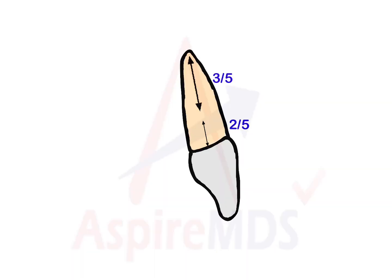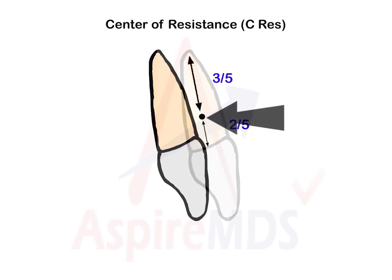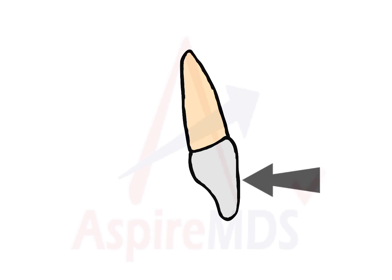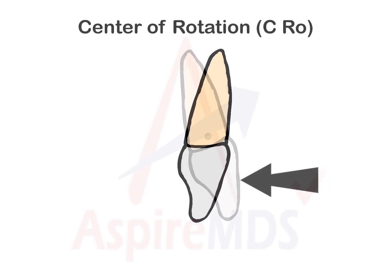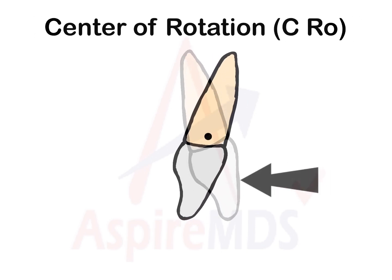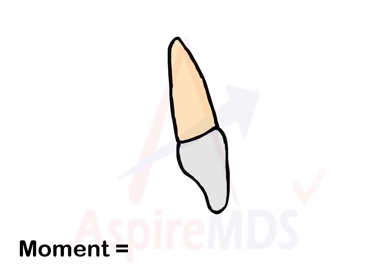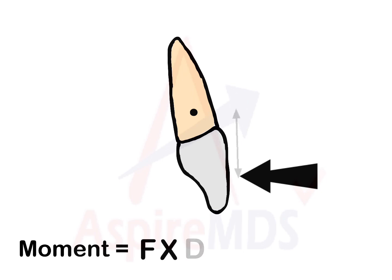At about two-fifths the length of the root from the alveolar crest lies the center of resistance. It is the point where if you apply the force, there would be bodily movement of the tooth. If force is applied at any other point than the center of resistance, the tooth will rotate around the center of rotation. This is known as moment of force, calculated by the amount of force applied multiplied by the distance between the point of force application and center of resistance of the tooth.